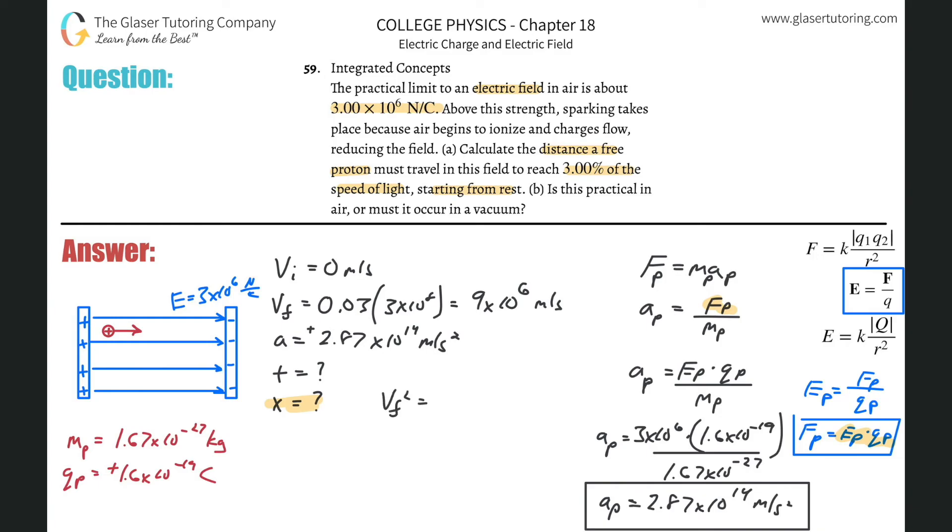Now we know enough to solve for the displacement. So this is just simple kinematics now. This is Vf squared is equal to Vi squared plus 2 times the acceleration multiplied by the displacement. So the final velocity here, as we mentioned, will be 9 times 10 to the 6th. That whole thing squared. And that will then equal the initial velocity, which was zero, plus then 2 times that acceleration of 2.87 times 10 to the 14th, multiplied then by the x.